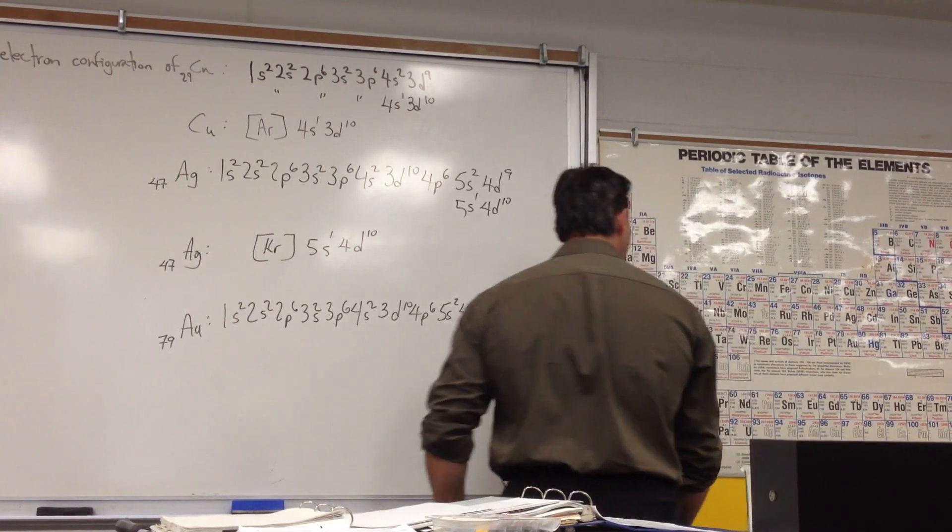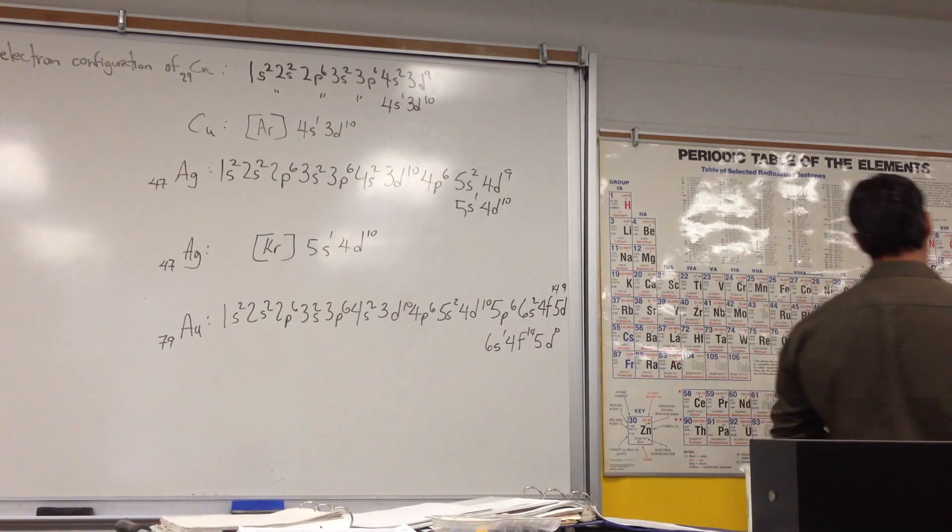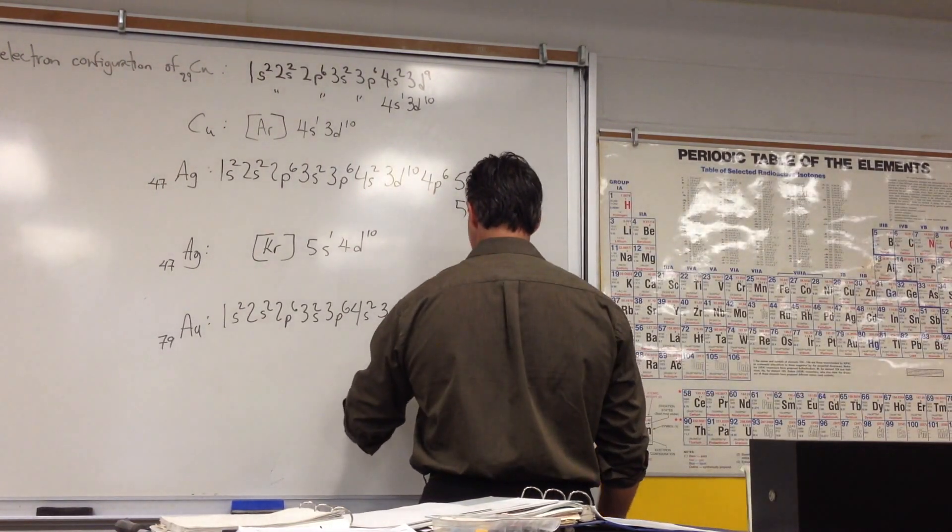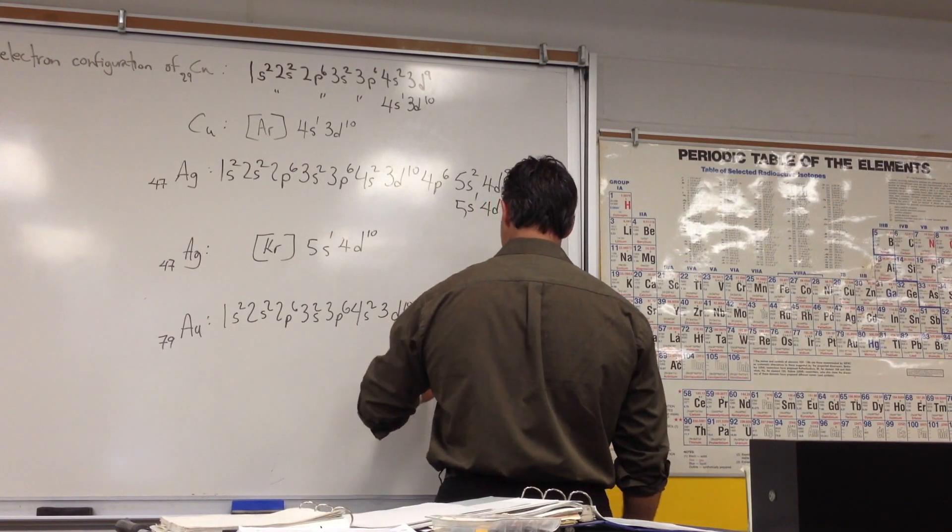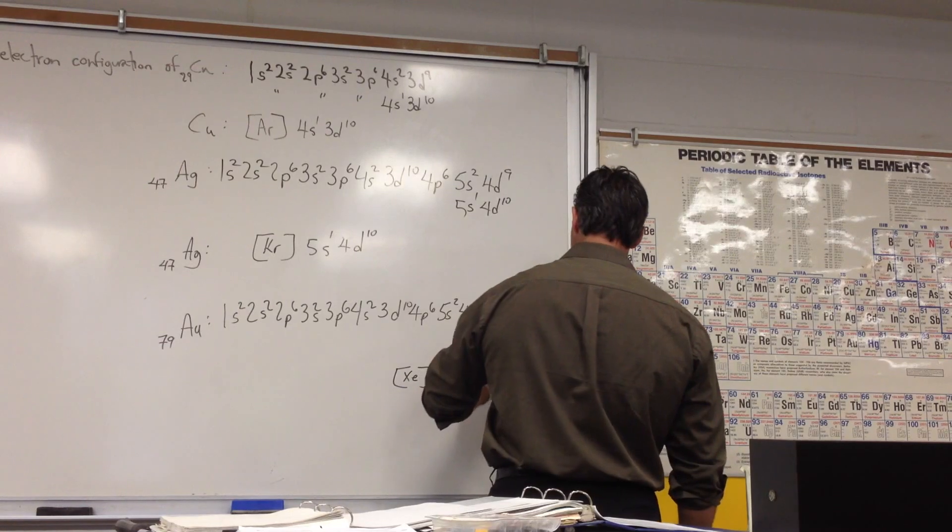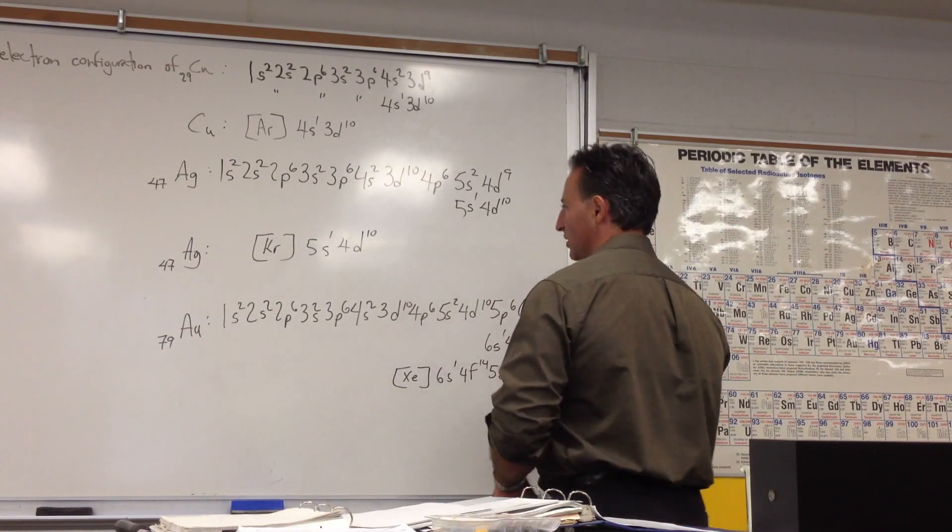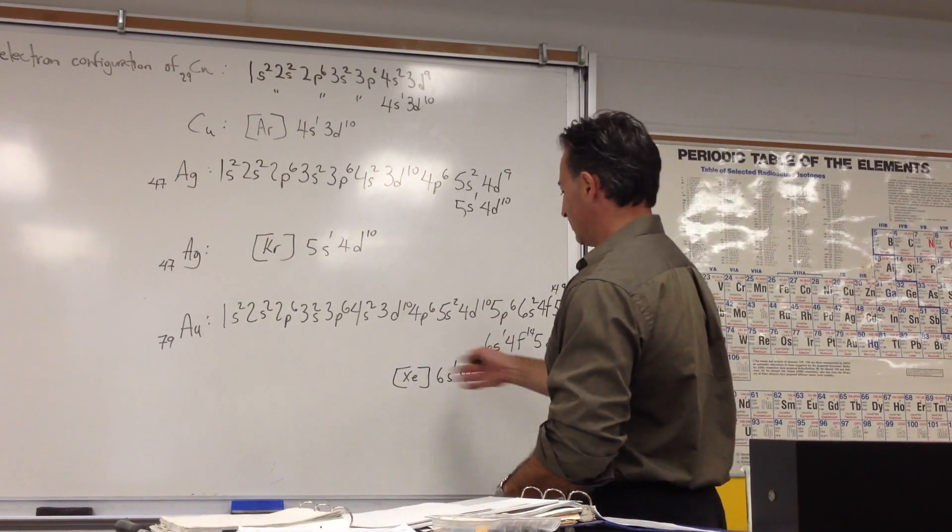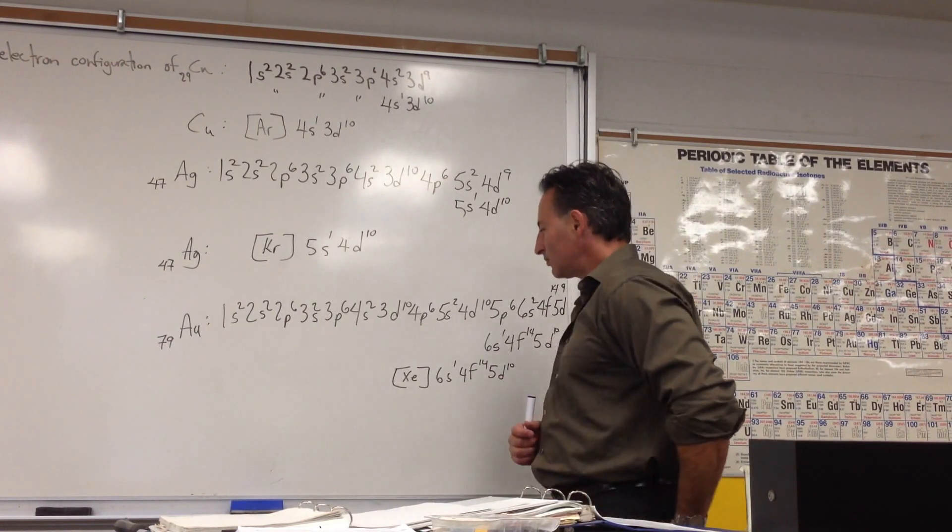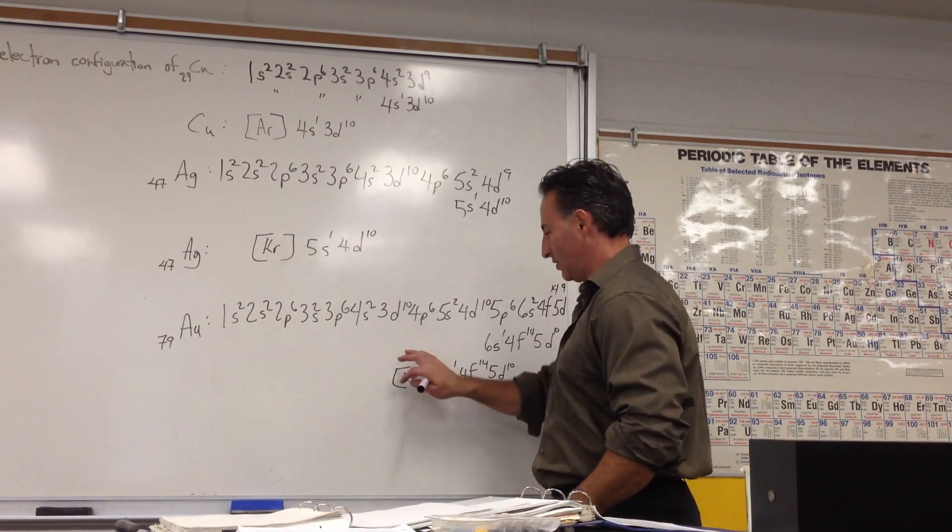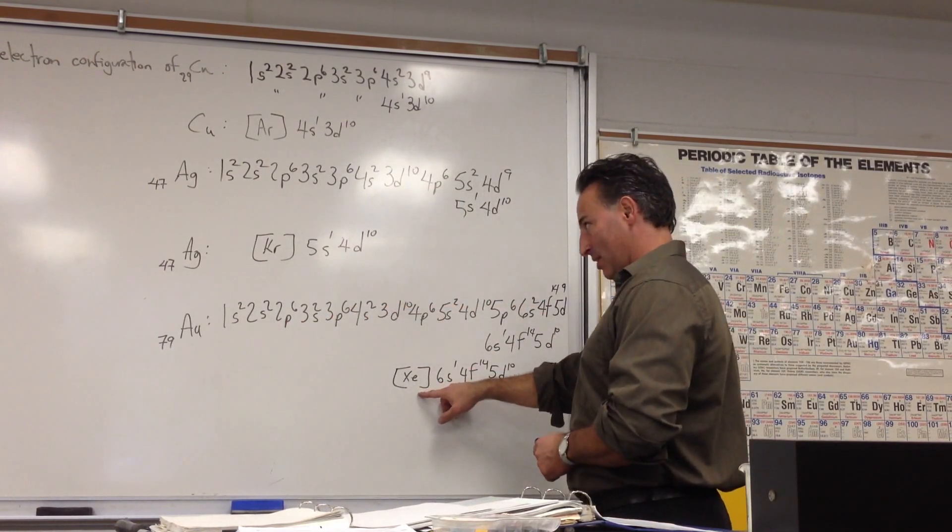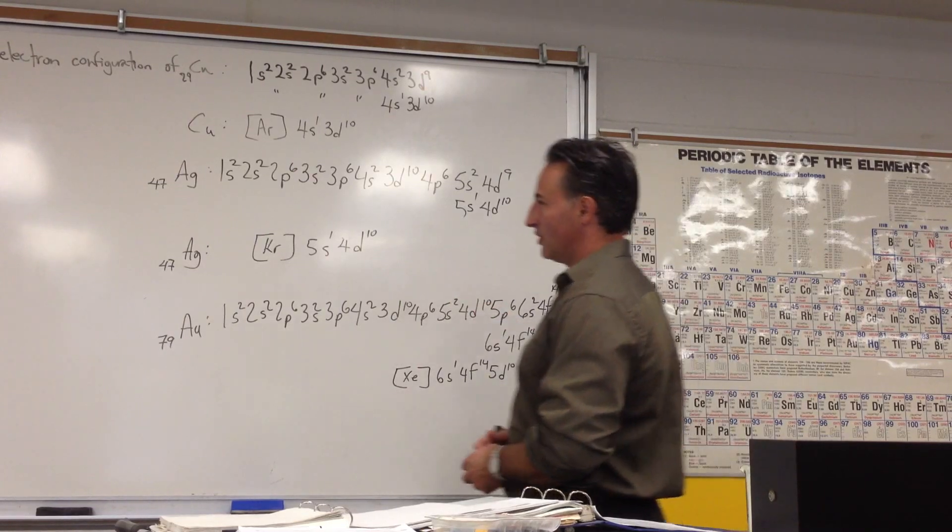And if we rewrite that in shorthand, the closest noble gas is xenon, which would be 5p6. So square bracket, xenon, 6s1, 4f14, 5d10 will give you the electron sub-level pattern for gold. So you're always writing the square bracket around when you do the shorthand. But you should be familiar how to do this part before you attempt to do that part, just to make sure you know how they fill.